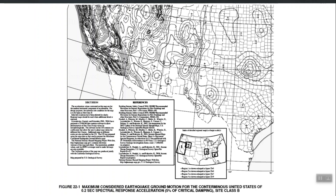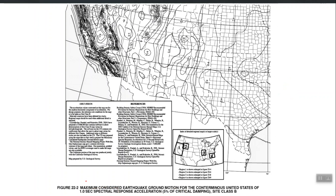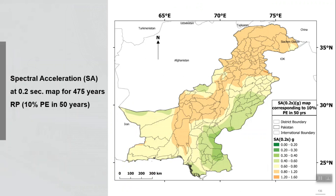In modern building codes we have SS and S1 maps. This is the SS map — spectral acceleration at 0.2 second, constructed by default for 5 percent damping — shown here for the US. Similarly there is an S1 map — one-second spectral response acceleration. We have also constructed SS and S1 maps for Pakistan. This SS map is for spectral acceleration at 0.2 second for a 475-year return period, which is DBE level. By default, when the code says SS it means at MCE level.